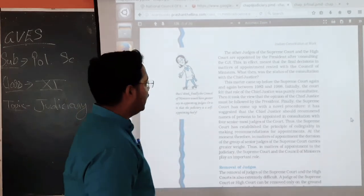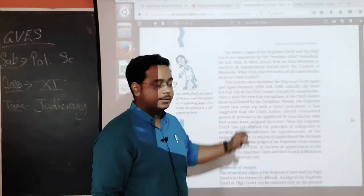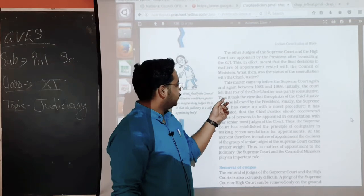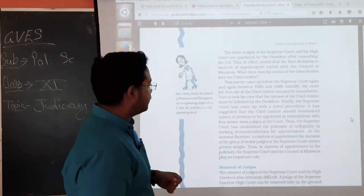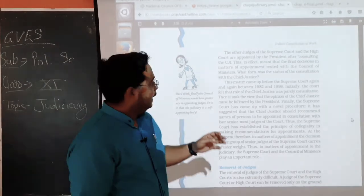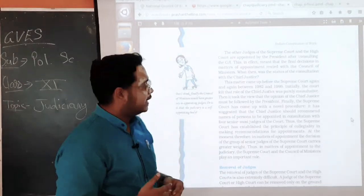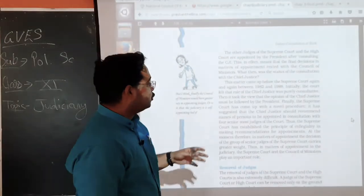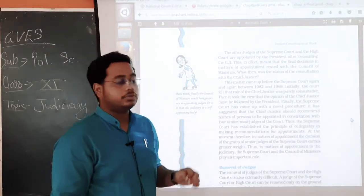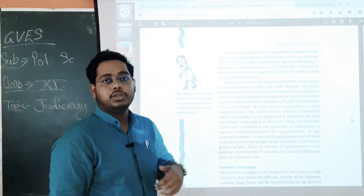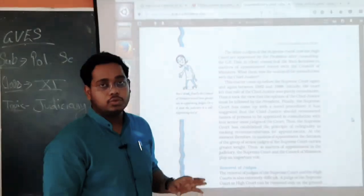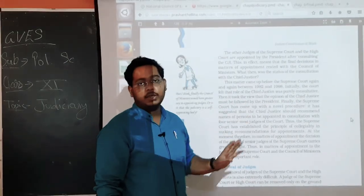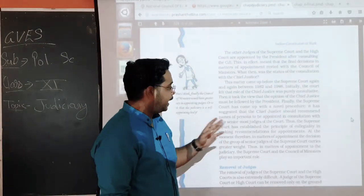This matter came up before the Supreme Court again and again between 1982 and 1998. Initially, the court felt that the role of the Chief Justice was purely consultative. Then, it took the view that the opinion of the Chief Justice must be followed by the President. But, in 1998, there was a change in the scenario. In that situation, it is said that whatever consultation comes from the Chief Justice of India, it should be followed by the President. Whatever the CJI says to the President, who is the better candidate, it should be made to the President. To make the assent an agreement. Yes I agree.